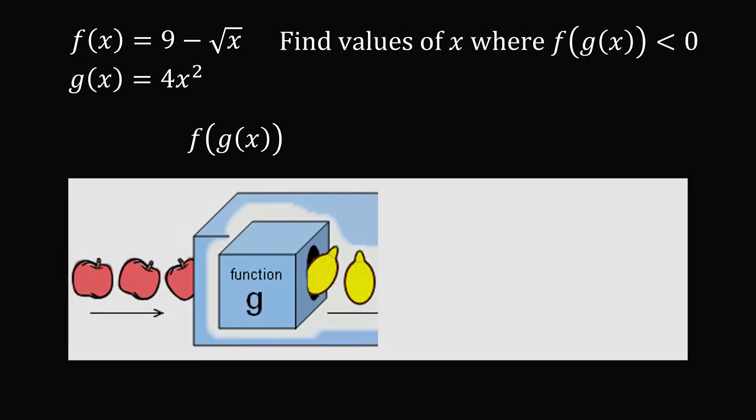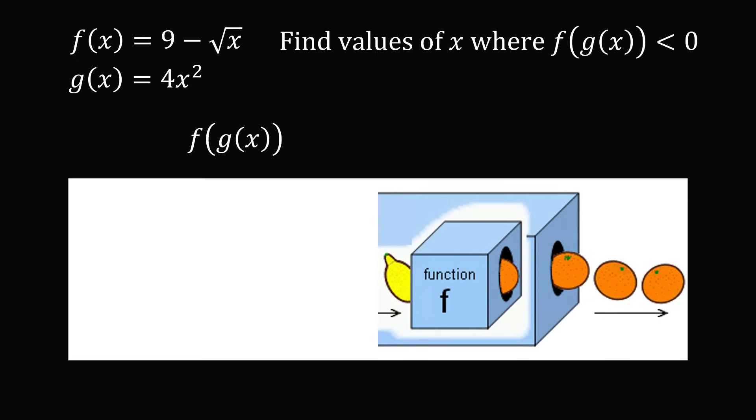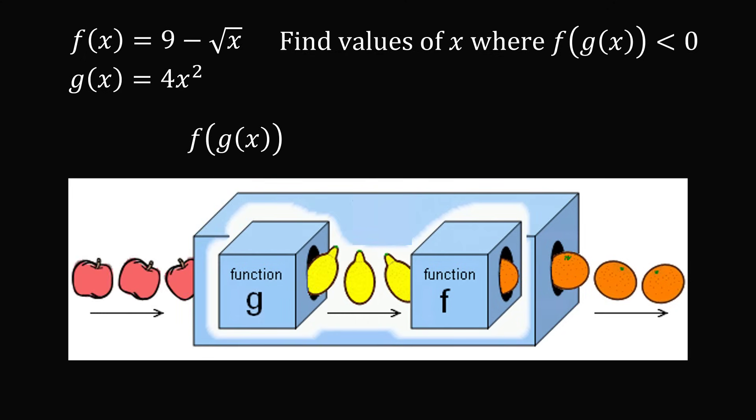So here's a nice visual way to understand it. Imagine we have a function g which is turning apples into lemons. So we have apples as the input and lemons as the output. Imagine we have another function f that is taking an input of lemons and having an output of oranges. What would happen if we run the two functions together? We first do g and then we do f. This is exactly what f of g is. We start out with apples. They get turned to lemons and then those lemons get turned into oranges.